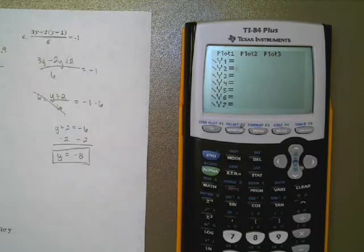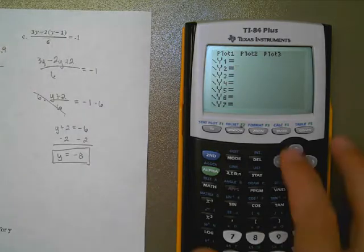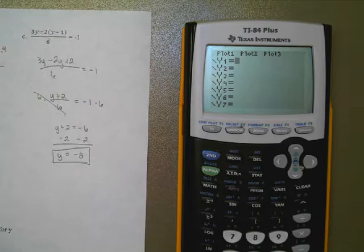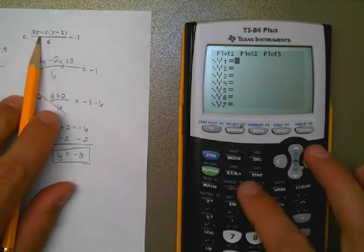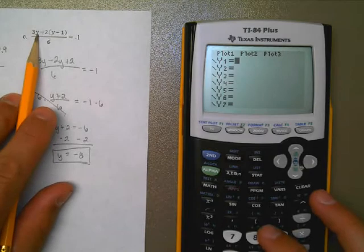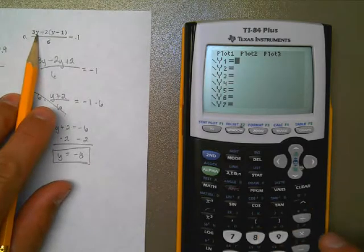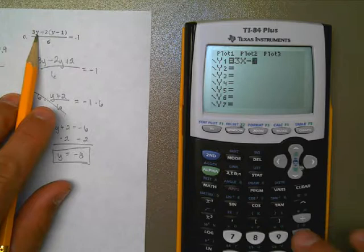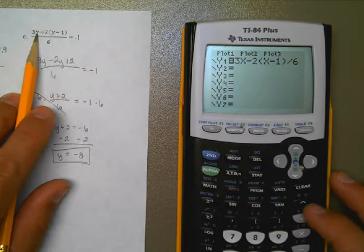Now in the calculator, the one trick that you need to understand is this. When I type in this information, remember I'm going to replace this with x, because that's what my calculator understands. So if I typed in 3x minus 2 times the quantity x minus 1, all over 6, and the right side is going to be negative 1.